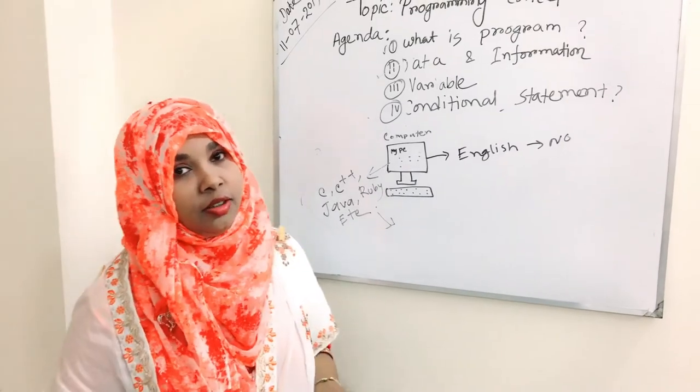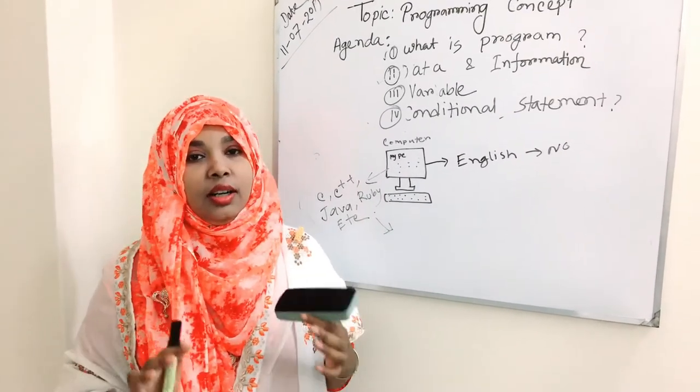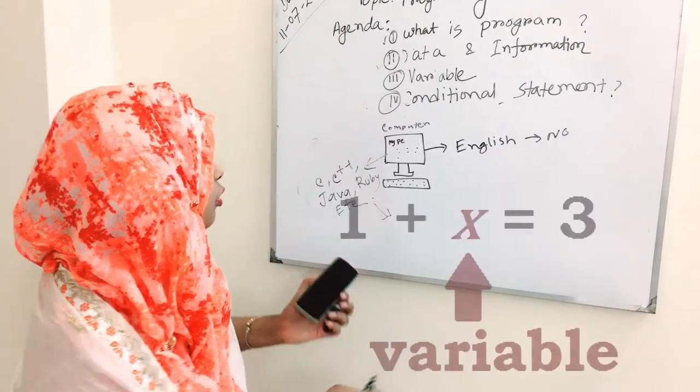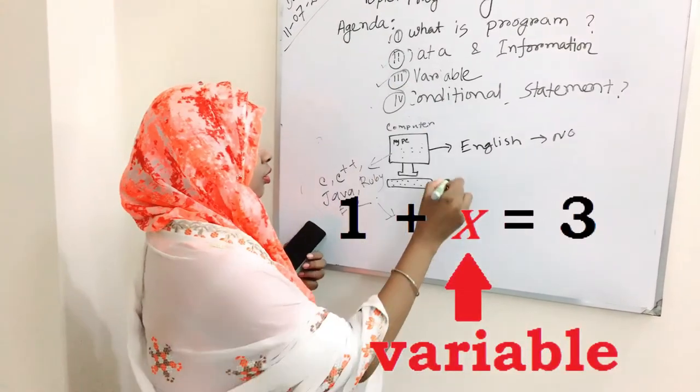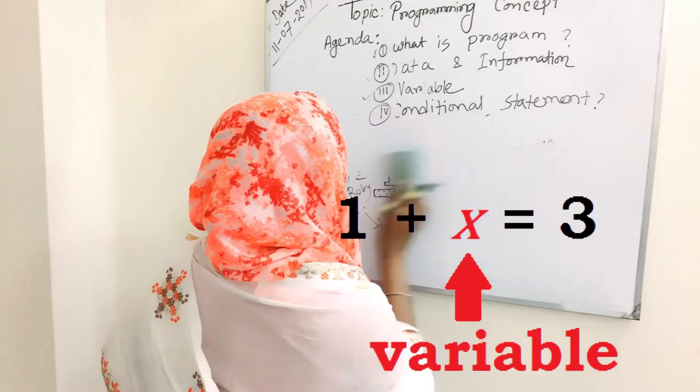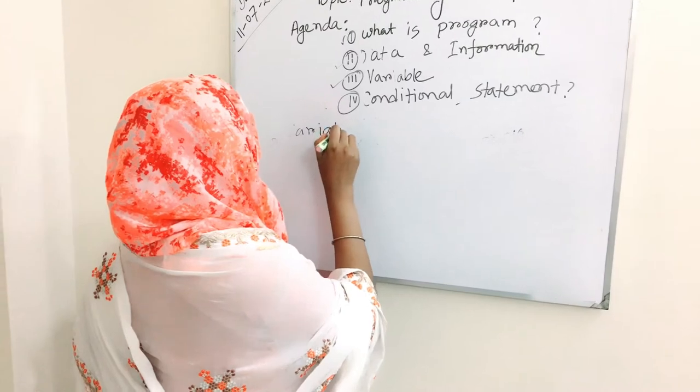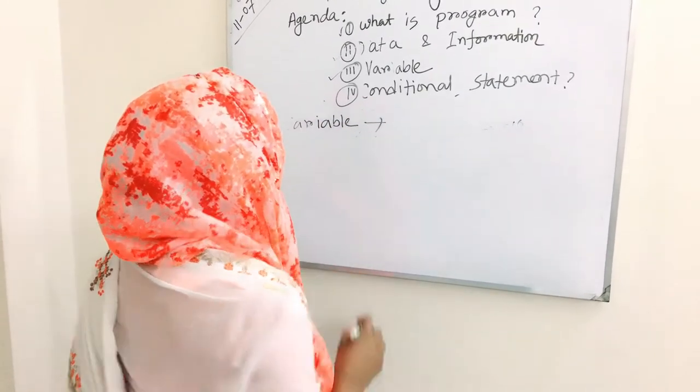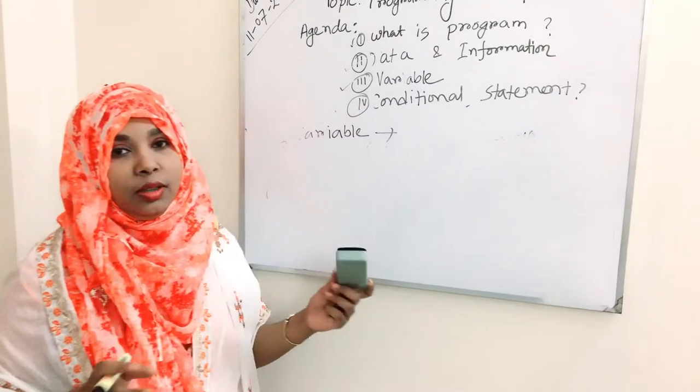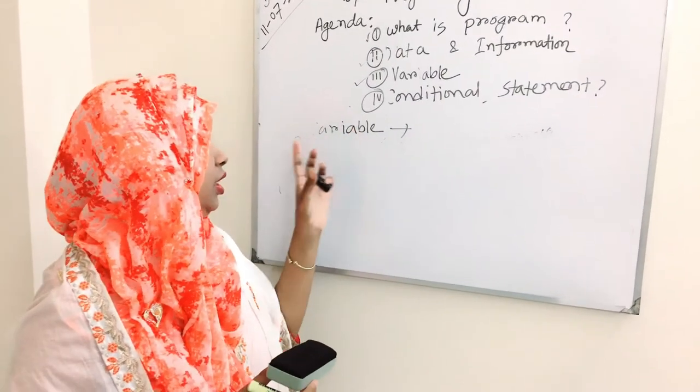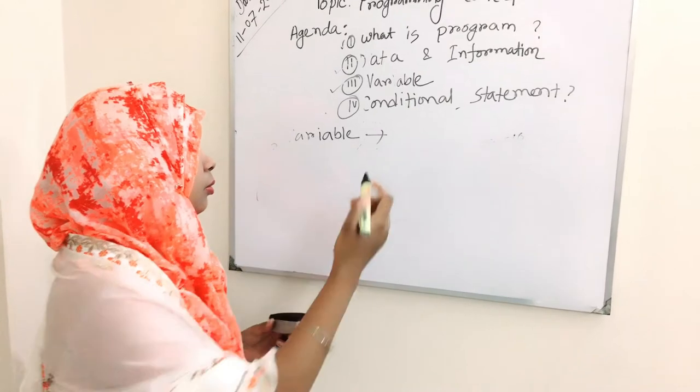So you have to clearly understand about data and information. Then you have to know about variable. Variable is the most important part of programming. You have to know about variable very clearly.